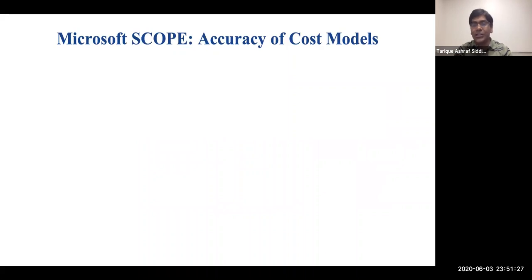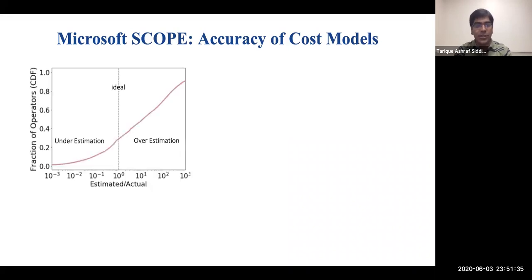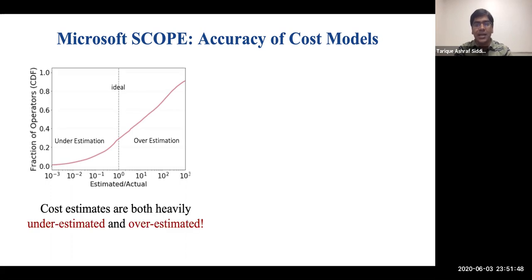In this work, we look at the accuracy of cost models in Scope, Microsoft's internal big data analytics system, very similar to cloud offerings from other companies. This figure shows the ratio of cost estimates with the actual runtime latencies in Scope. The vertical dashed line at 10 to the power 0 corresponds to ideal estimates. Unfortunately, we can see that cost estimates are both heavily underestimated and overestimated, showing that cost models have poor accuracy in these systems.